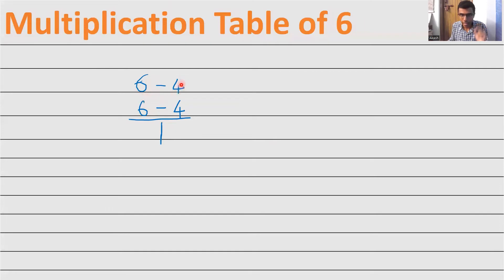Since this is Vedic Math, you will get your answer in two parts, left part and right part. You can divide it like this. Now to get the right part, what you need to do is you need to multiply these two on the right side of the minus sign. What is 4 into 4? 16.